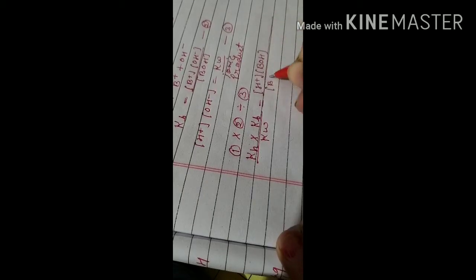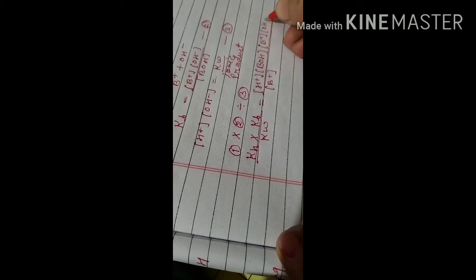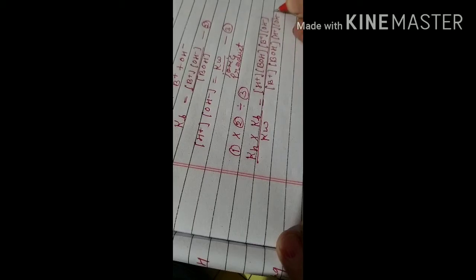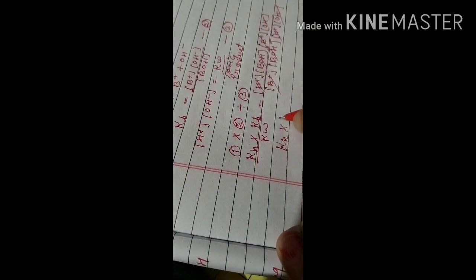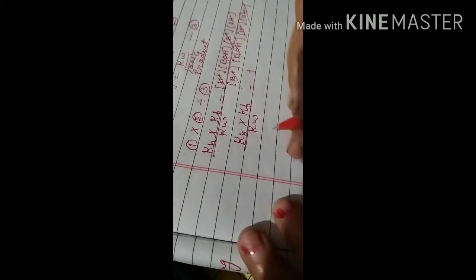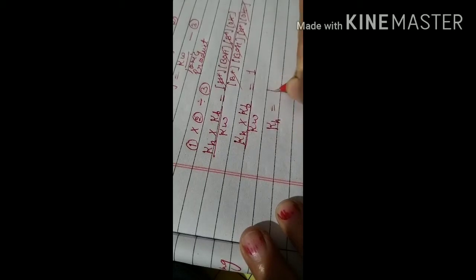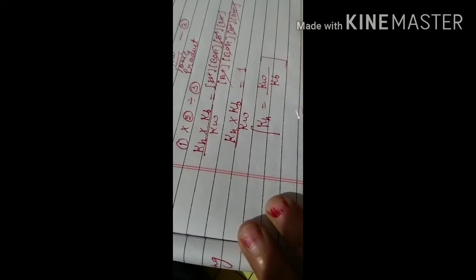Substituting all values: Kh × Kb / Kw equals [H⁺][BOH]/[B⁺] × [B⁺][OH⁻]/[BOH] divided by [H⁺][OH⁻]. All terms cancel, giving Kh × Kb / Kw = 1, so Kh = Kw / Kb. This is the hydrolysis constant formula for a salt of a strong acid and a weak base.